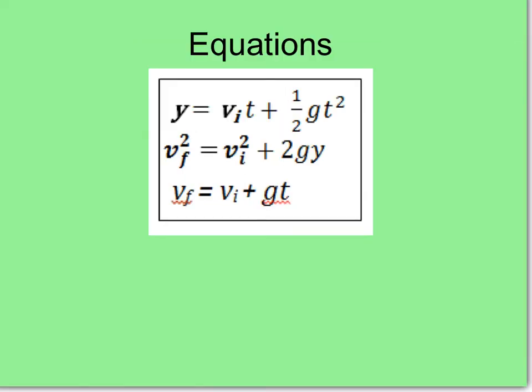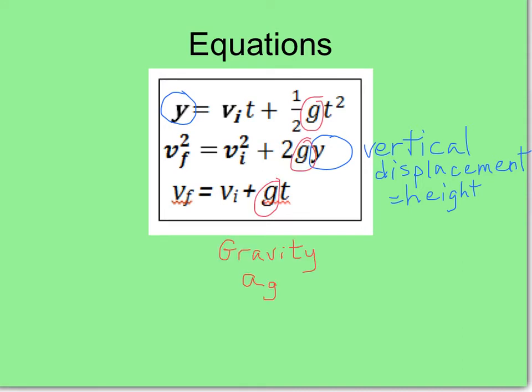Here are the equations that we've used for vertical motion. Let's make sure that we know what each of these represents. Y represents the height, the vertical displacement in the y direction. Gravity, g, or the acceleration due to gravity, a sub g, is present in all three equations. Of course, we know the value of that is negative 10 meters per second squared in all instances, regardless of the motion or non-motion of the object.